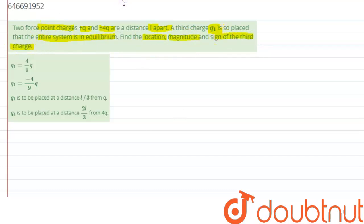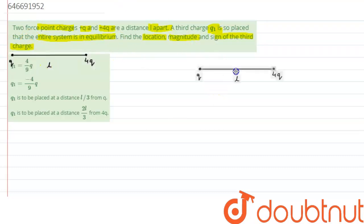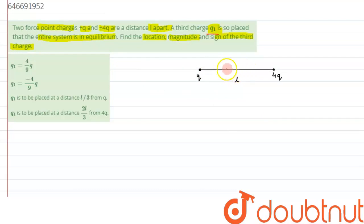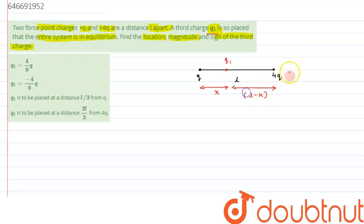Let's try to visualize the given situation. We have two charges separated by a distance l, and we have to take into consideration charge q1 so that the system is in equilibrium. Let's suppose we consider charge q1 to be at a distance x from charge q, so it will be at a distance of l minus x from charge 4q.